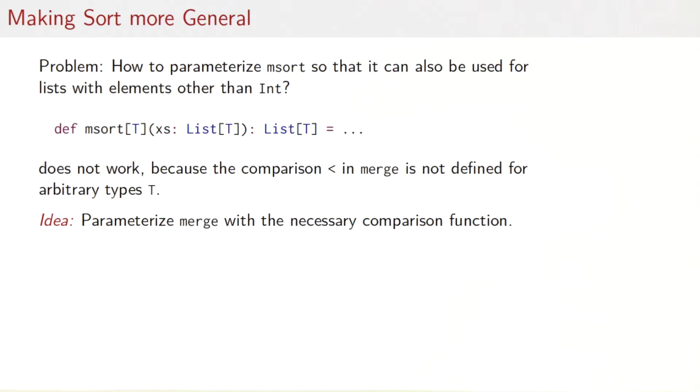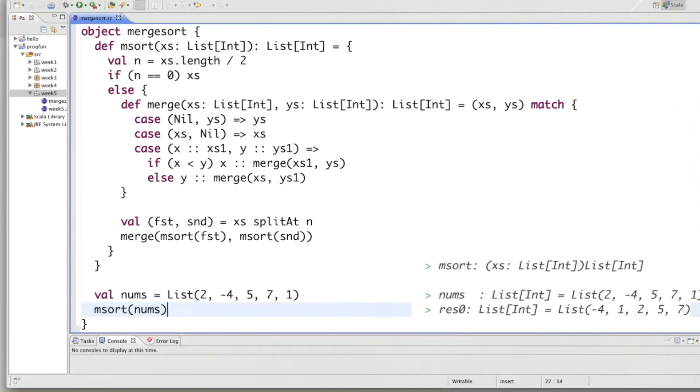One shortcoming of the merge sort function we've seen last session was that it can only be applied to list of ints. But it makes sense to apply the same function or a similar function also to lists of other element types such as strings or doubles or booleans and so on. How could we achieve that? The most straightforward way to do that would be let's parameterize merge sort. So instead of int I have a type parameter t now. But that wouldn't work because the comparison function wouldn't be well defined.